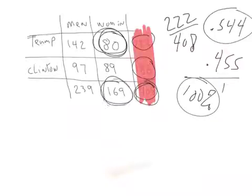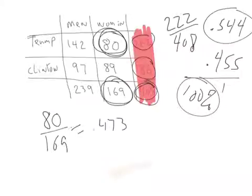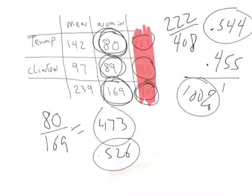That's conditional distribution. Of course, we would say, well, of the women, all the women here divided by the total women. So it's 80 divided by 169, and we end up with 0.473 or 47 percent. Then, how many are going to vote for Clinton? We end up with 0.526. So that's marginal distribution—that's the totals. Conditional distribution—that's where you separate it out.